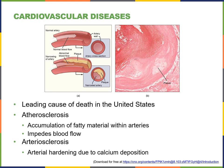There are lots of cardiovascular diseases — they are the leading cause of death in the United States. Atherosclerosis is accumulating fatty material within the arteries that impedes blood flow — this is when you hear about different bypasses. Arteriosclerosis is arterial hardening due to calcium deposition. Both are things we do not want. We want a normal artery with normal blood flow and no plaque clogging it — if blood doesn't flow easily, that's when we start to get higher blood pressure.